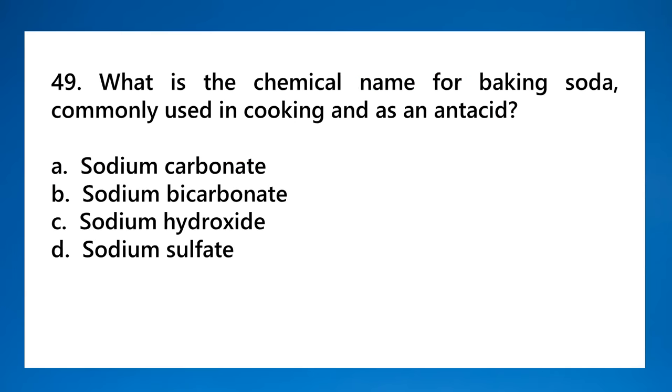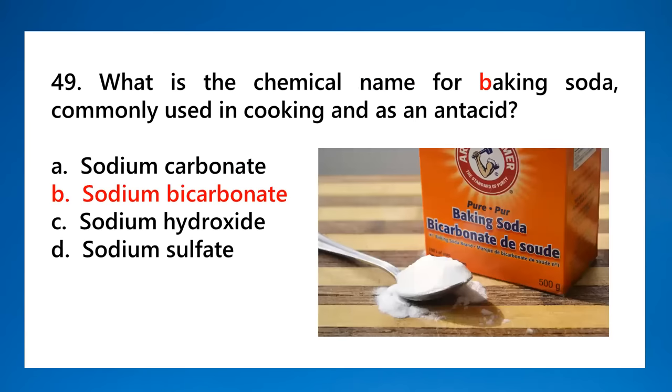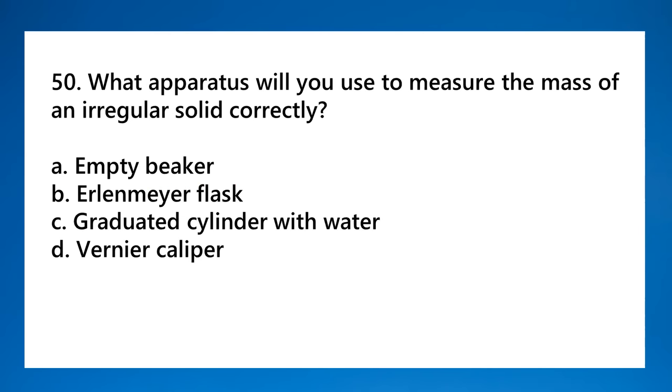Number fifty-seven: which phenomenon did Maxwell's equations predict and confirm? That is electromagnetic radiation. Maxwell identified electricity and magnetism and gave a new theory called electromagnetic theory. He developed four equations called Maxwell's equations. Using these he predicted the existence of electromagnetic waves. He calculated the speed of electromagnetic waves which was similar to the speed of light and said that light is an electromagnetic wave. Number fifty-eight: the principle behind a microwave oven's operation is radiation. Number fifty-nine: in thermodynamics, what is entropy? A measure of disorder or randomness - energy unavailable to do work.